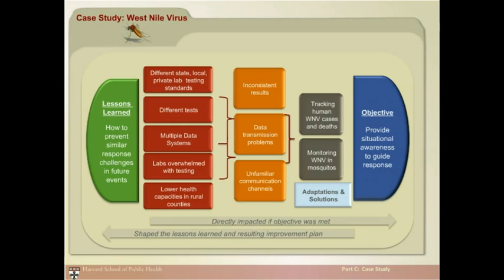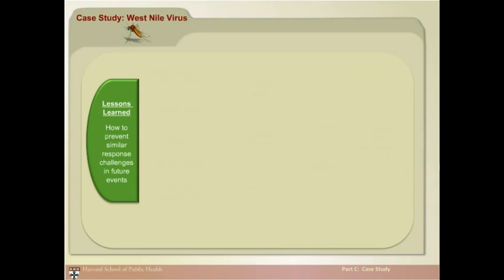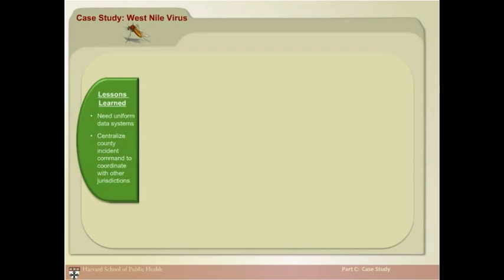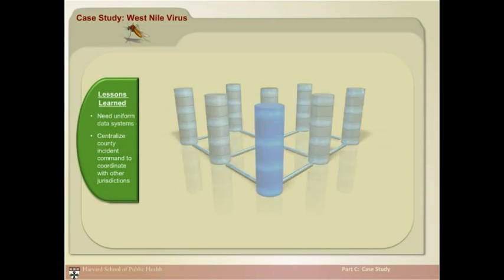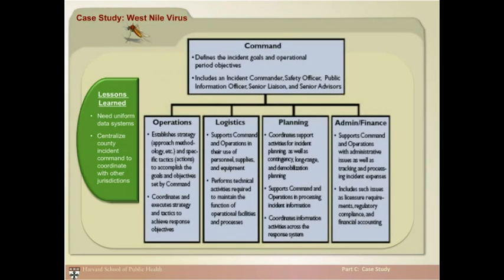To address these problems, ad-hoc mechanisms were developed late in the outbreak to share surveillance data. For example, once any jurisdiction received a report, they immediately emailed all of the other jurisdictions. Two lessons for improving public health system preparedness were suggested: the need for clear, comprehensive, uniform data systems, and also a central incident command system in each county to coordinate with other jurisdictions.